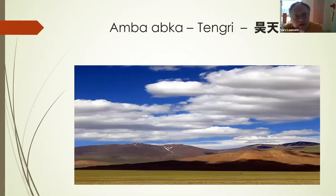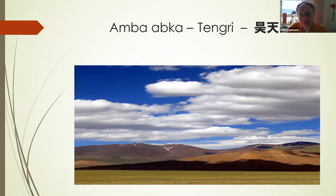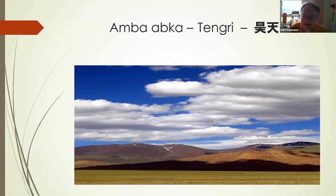So where do the Manchus come from? Manchus come from an area dominated by plains. These plains and mountains are delineated at the top by the sky. This is where the Mongols, the Manchus, and other Tungusic families get their veneration for space and especially for the space above.